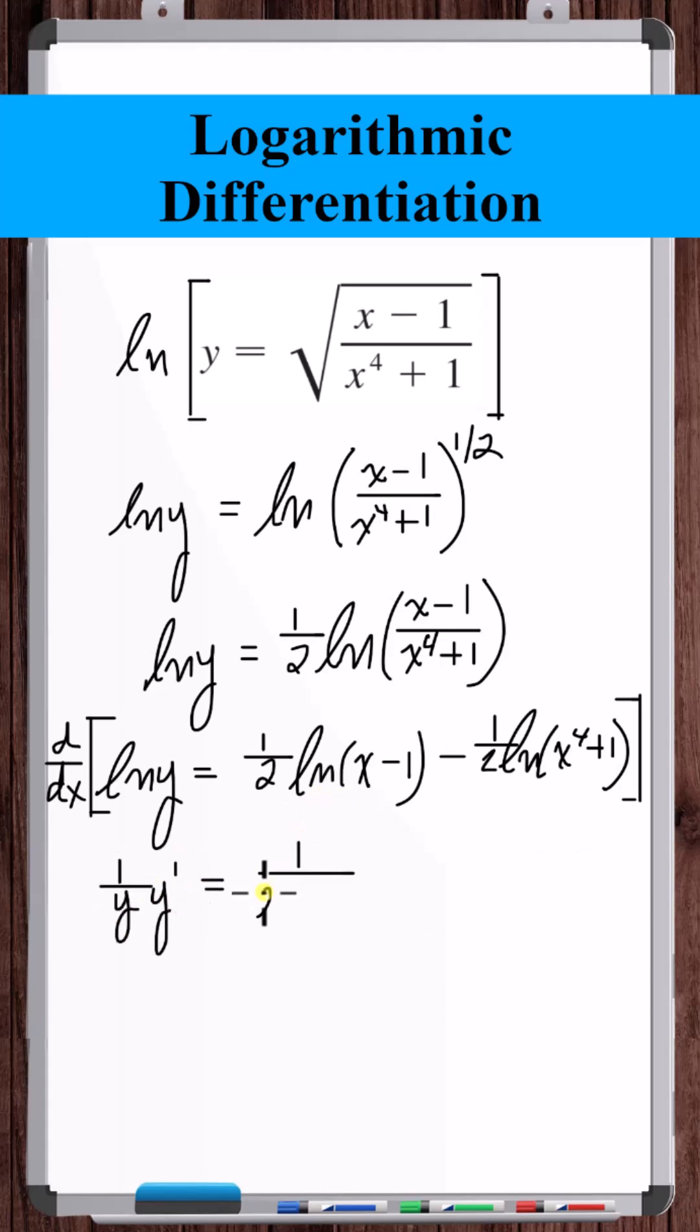The derivative of natural log of x minus 1 is 1 over x minus 1. The derivative of natural log of x to the fourth plus 1 is 1 over x to the fourth plus 1, times the derivative of x to the fourth plus 1, which is 4x cubed.